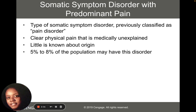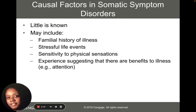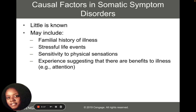Somatic symptom disorder with predominant pain occurs when people have clear physical pain that is medically unexplained. It used to be called just a pain disorder. Little is known about its origin, but five to eight percent of the population may have this disorder. As for causal factors, we don't know a lot about what causes it, but it could be a family history of illness and preoccupation with illnesses, stressful life events — for some people, they experience their stress in somatic ways — and sensitivity to physical sensation.